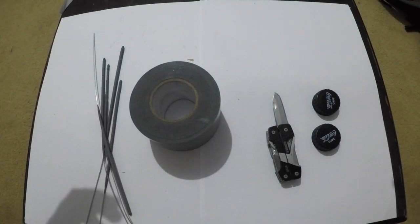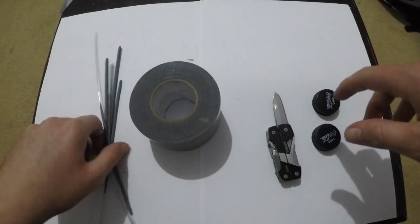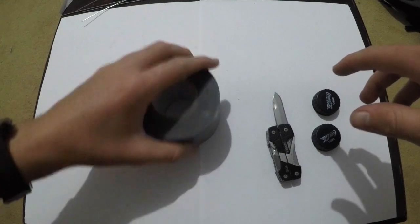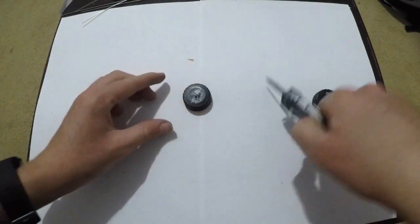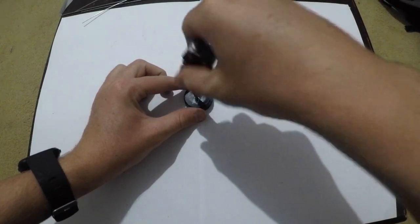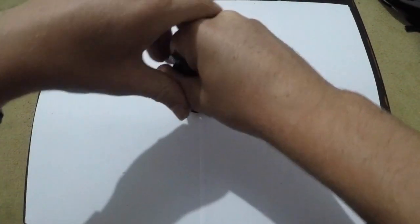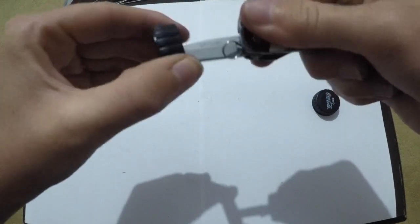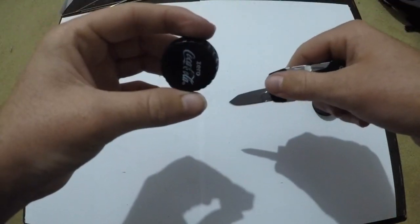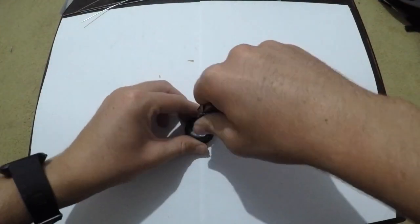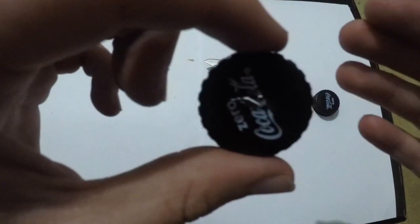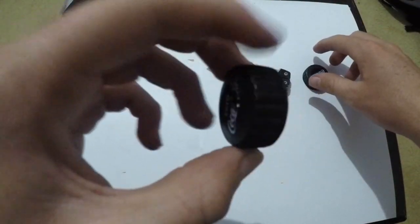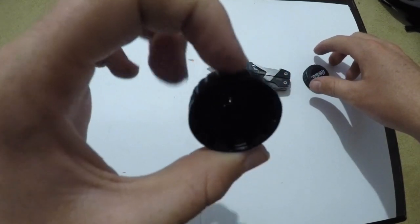Put this stuff to the side. The first thing you're going to want to do is get one bottle cap and the knife. Now you just want to poke a hole in the top of the cap.